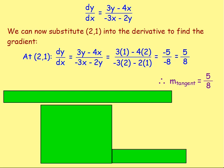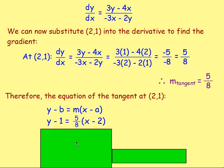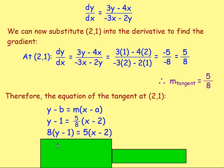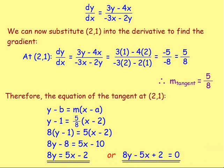After that, think gradient point equation. Gradient — we've got it, it's 5 eighths. Point — we know the point's 2, 1. Then we just want the equation: Y minus B equals M bracket X minus A. So you'd have Y take away 1 equals 5 eighths bracket X take away 2. Multiply both sides by 8 to get rid of the fraction: 8Y take away 8 equals 5X take away 10. Rearrange to get 8Y equals 5X take away 2, or 8Y take away 5X plus 2 equals 0. You can write it different ways, as long as you gather all your like terms.